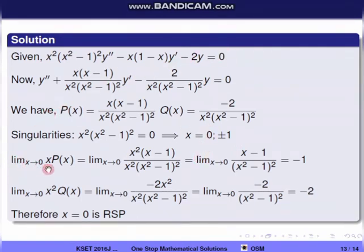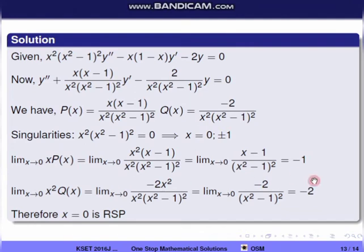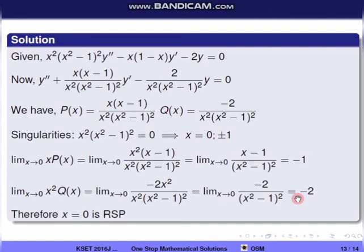Checking x = 0: lim(x→0) x·p(x) = lim(x→0) (x−1)/(x²−1)² = −1, which is finite. And lim(x→0) x²·q(x) = lim(x→0) −2/(x²−1)² = −2, also finite. So x = 0 is a regular singular point.